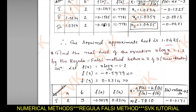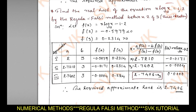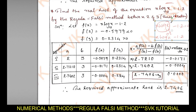Moving on to the next problem: find the real root of the equation x·log₁₀(x) = 1.2 using the Regula Falsi method. The equation can also be written as x·log₁₀(x) − 1.2 = 0. Note: when the problem states log₁₀(x), use the log key on your calculator; when it says just log x, use the ln (natural log) key.